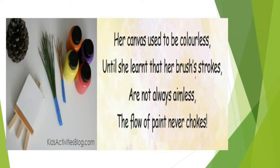Her canvas — that is the drawing sheet — used to be colorless, until she wanted to learn the brush stroke. 'Stroke' means gentle movement. She did not stop her tries, and the flow of paint on the board — 'chokes' means stopped. In this second stanza, 'colorless' and 'aimless' are rhyming words, and 'strokes' and 'chokes' are rhyming words.